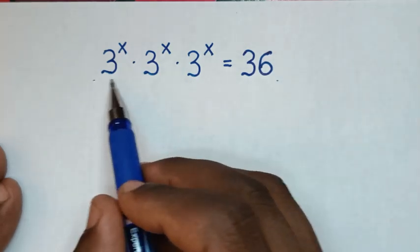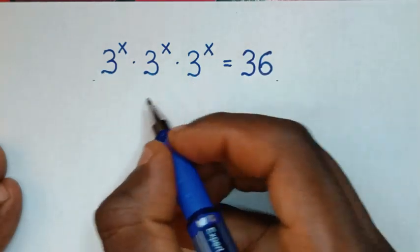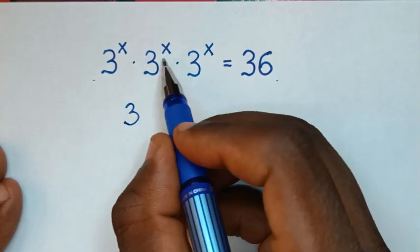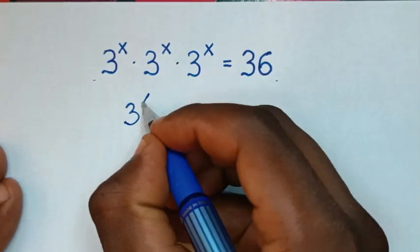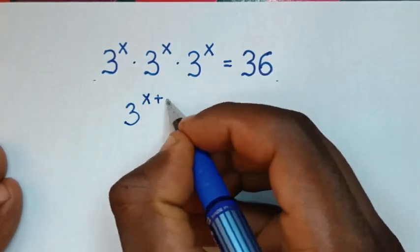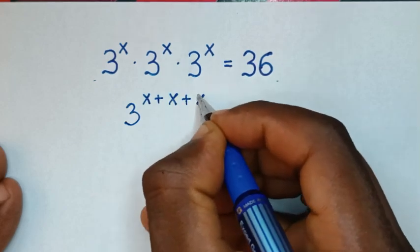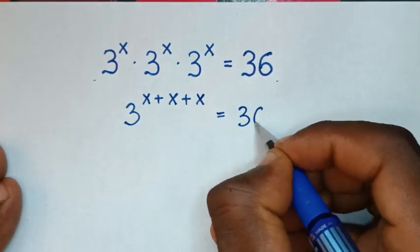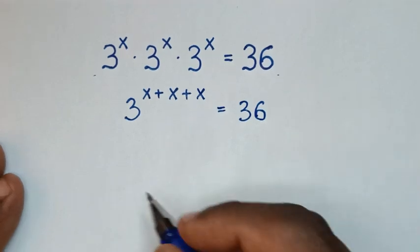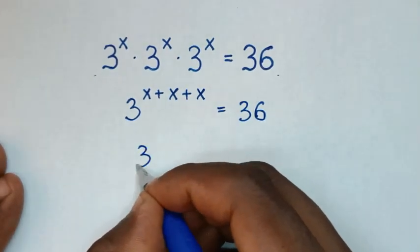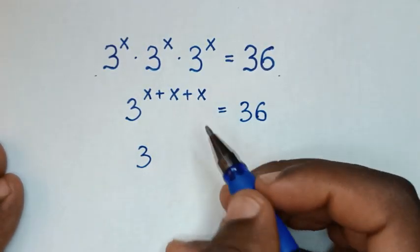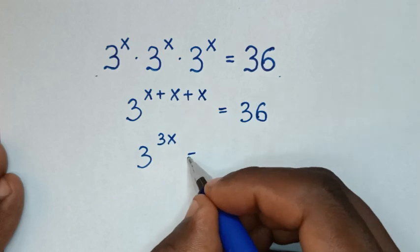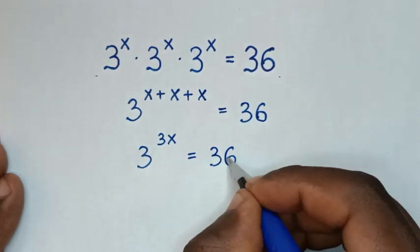In the first step, since the bases are the same — all base 3 — we combine the exponents: 3 power of x plus x plus x, which gives us 3 power of 3x is equal to 36.